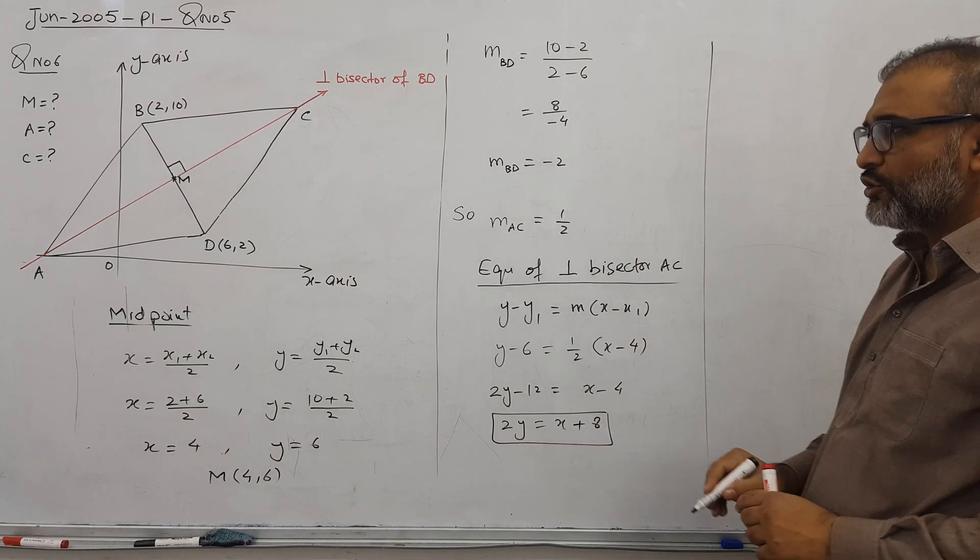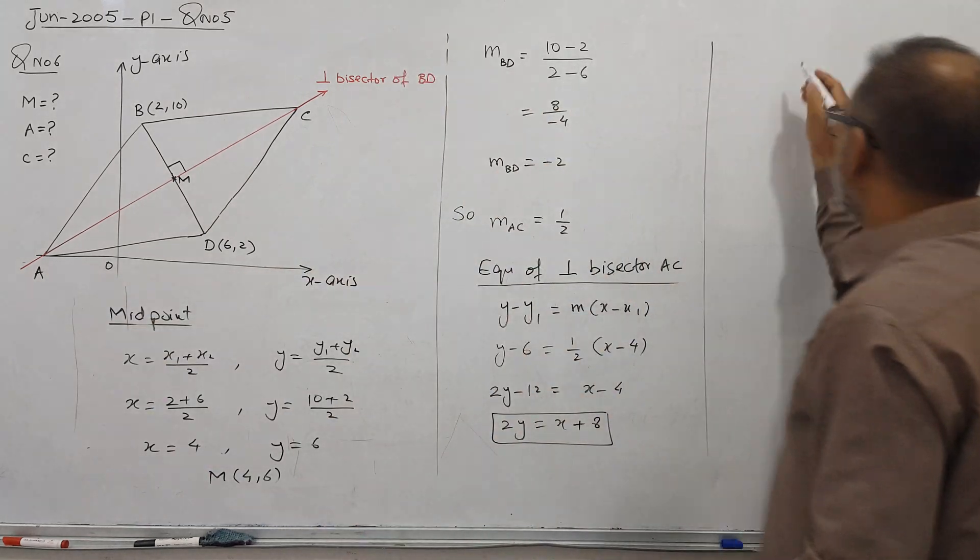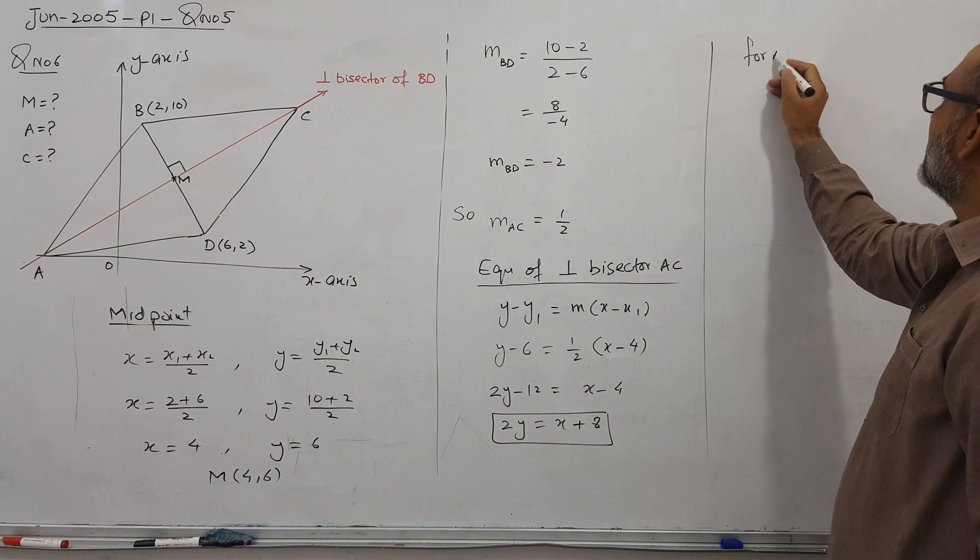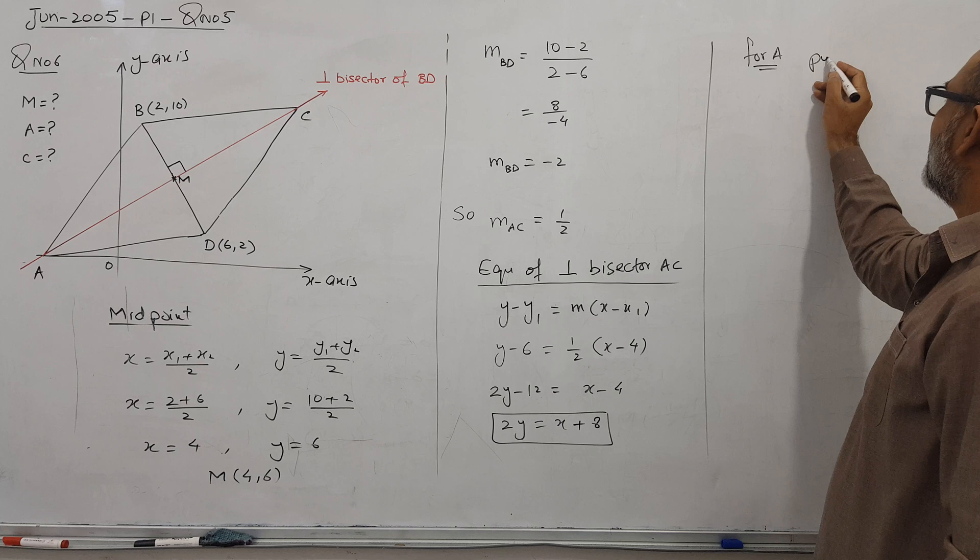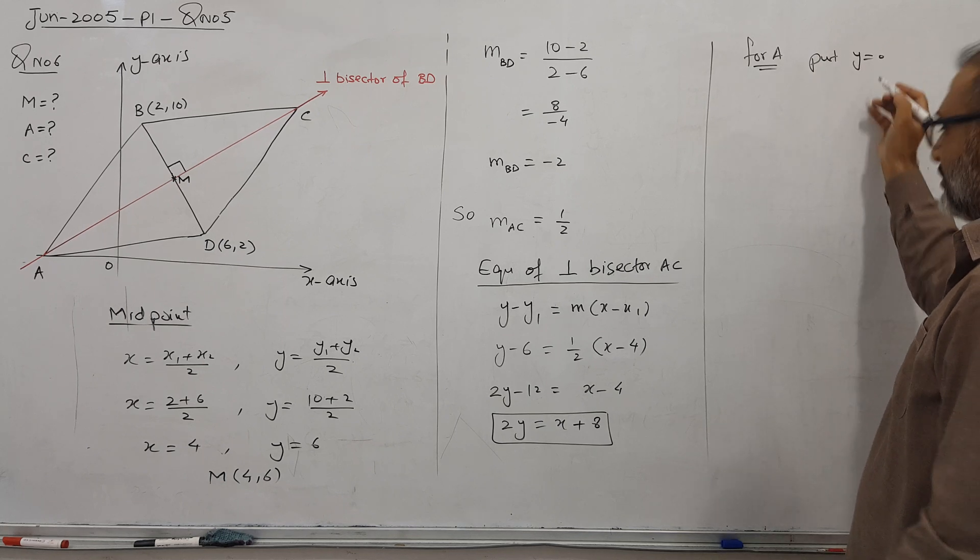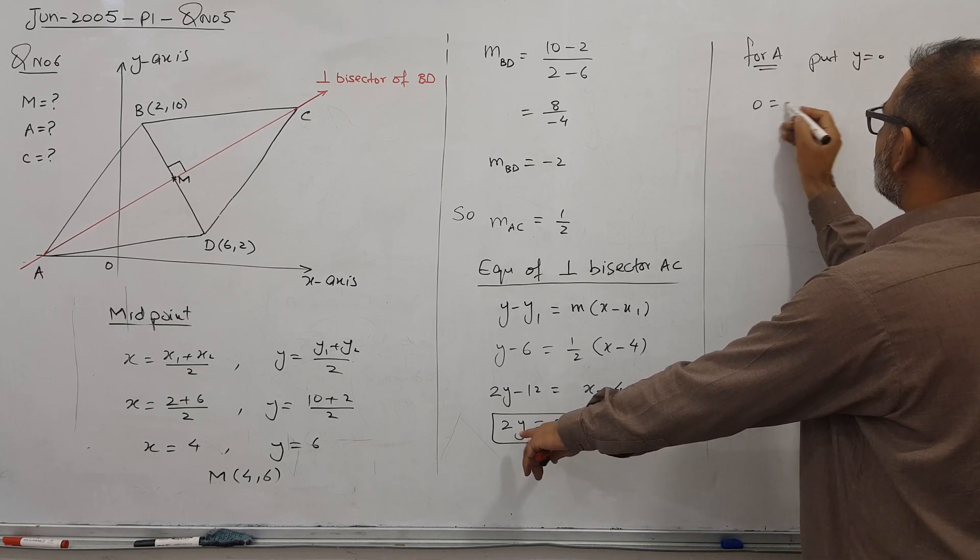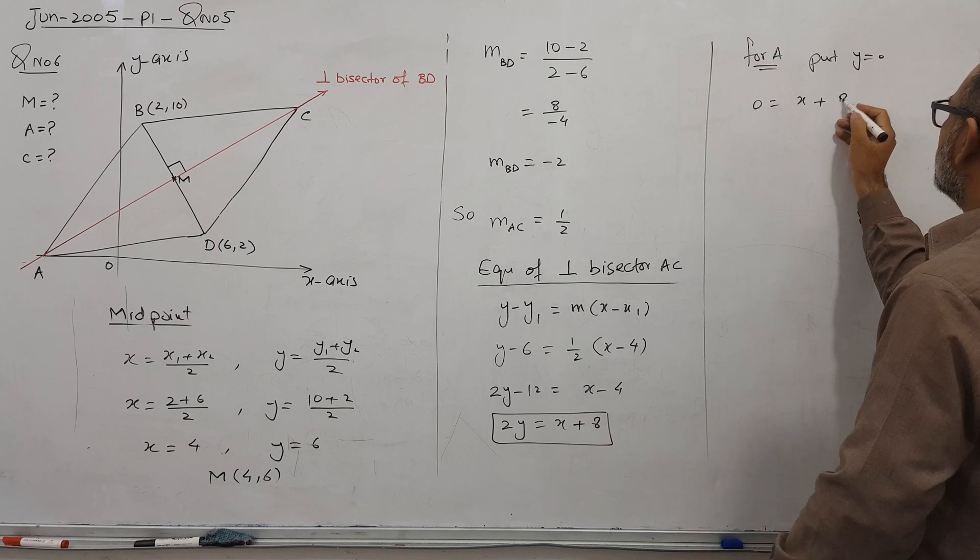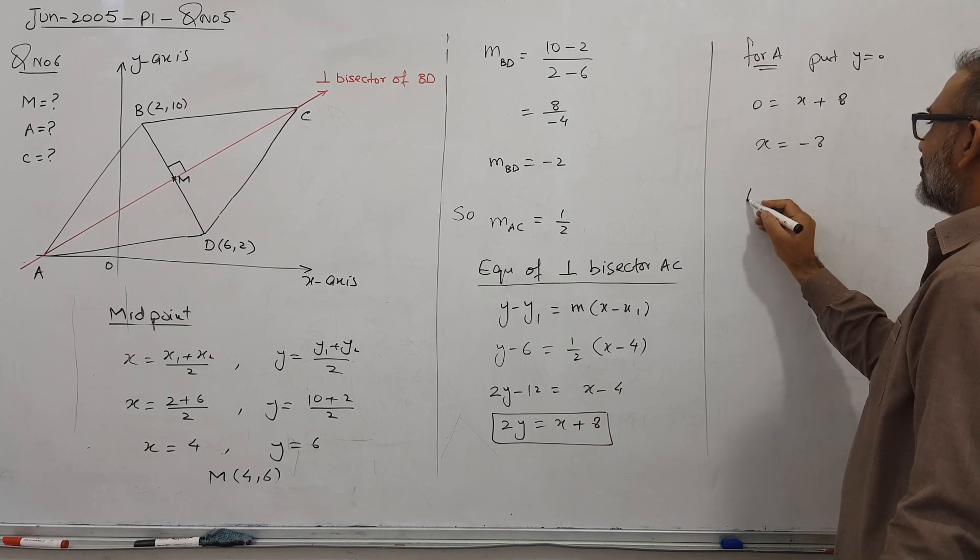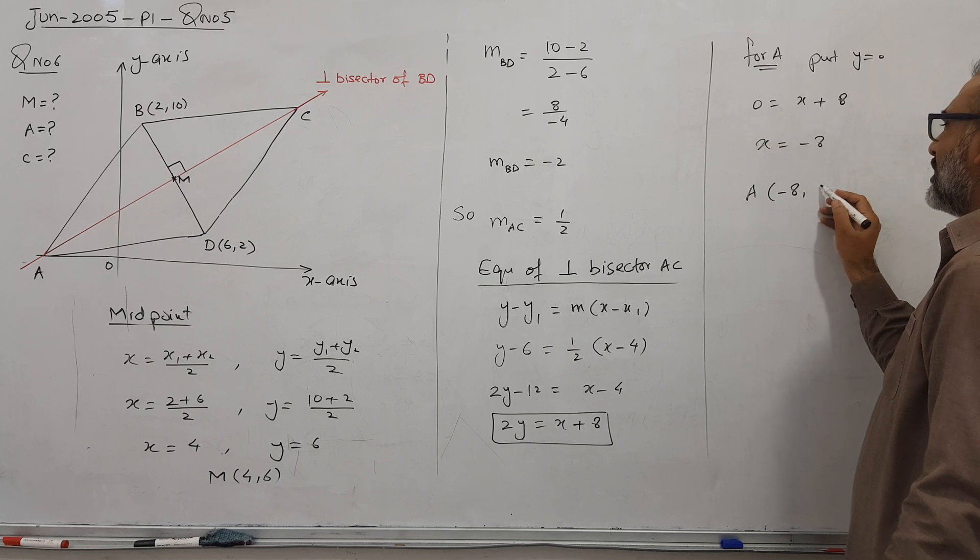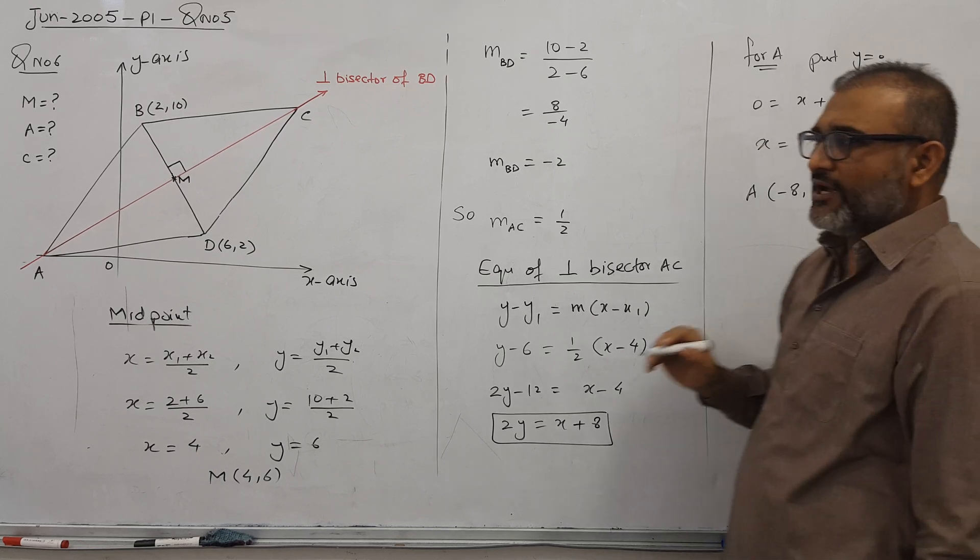But is my question over? No. For A coordinate, I will put here. For A coordinate, put Y equals 0. You know Y equals 0 reason. So 0 into 2 is 0. X plus 8. 8 goes there. Minus 8. So A coordinate becomes minus 8, 0. So I got it.